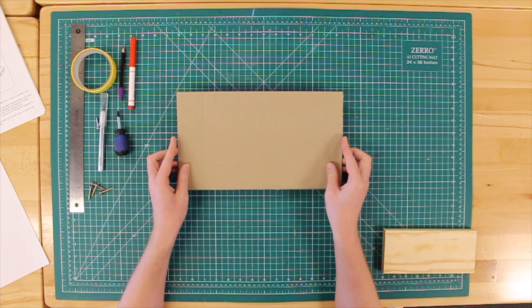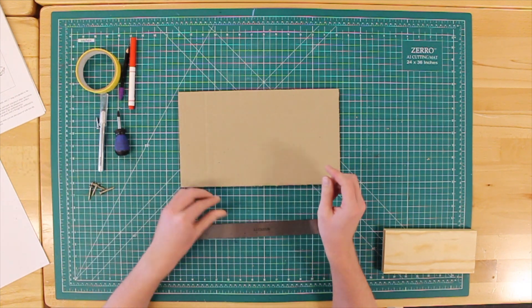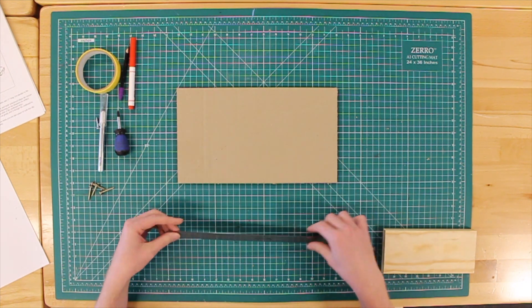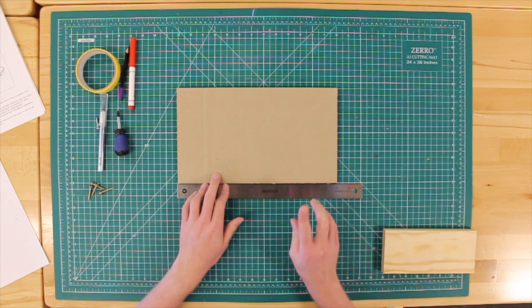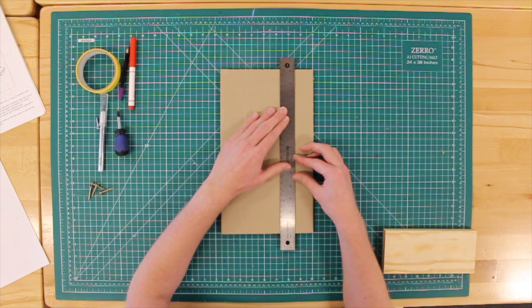Alright, the first thing we're going to do is cut down four one and a half by thirteen inch strips from our cardboard. Now I've already cut my piece of cardboard to thirteen inches, so now all I need to do is cut them in one and a half inch strips.